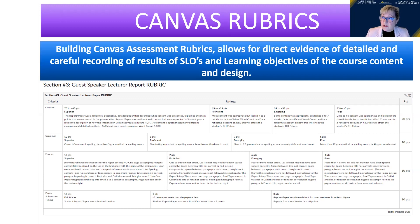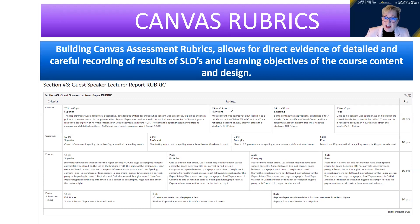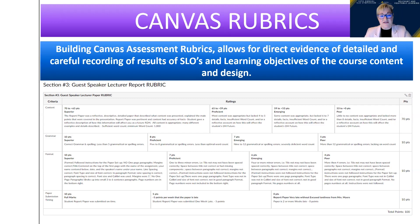You can use a description like excellent, proficient, or developing, or if you're using points, it can be a range. For example, to be rated superior you'd get 65 to 70 points; proficient would be 59 to 65; emerging 53 to 59; and poor 0 to 53. When grading a project, you click into the rubric and give a certain amount of points based on whether they satisfied everything to be a superior rating per your description.